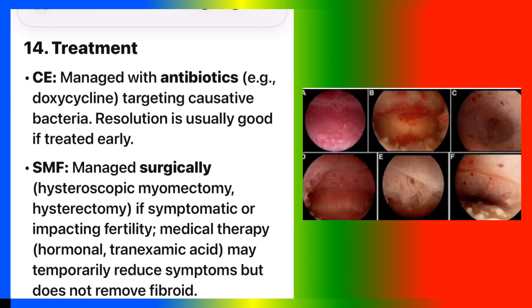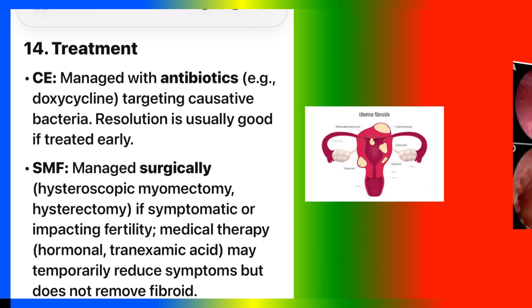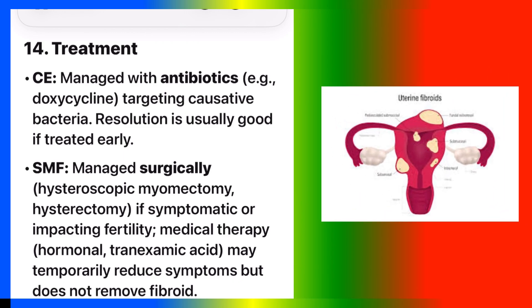Number fourteen: treatment. CE is managed with antibiotics, e.g., doxycycline, targeting causative bacteria. Resolution is usually good if treated early. SMF is managed surgically — hysteroscopic myomectomy or hysterectomy — if symptomatic or impacting fertility. Medical therapy such as hormonal agents or tranexamic acid may temporarily reduce symptoms but does not remove the fibroid.